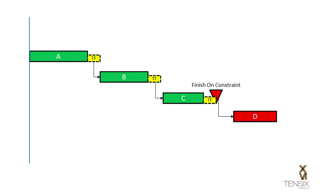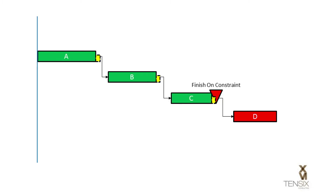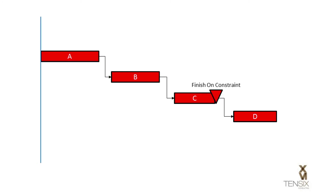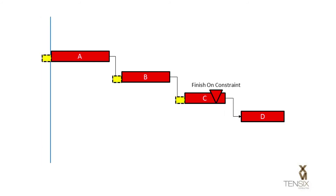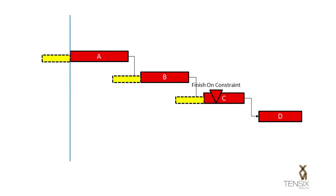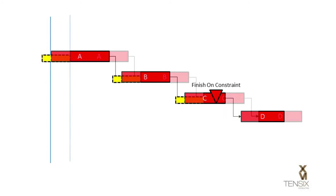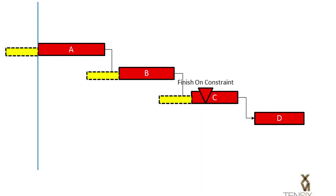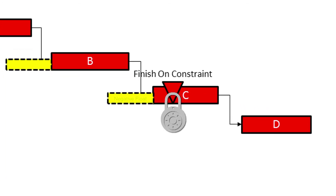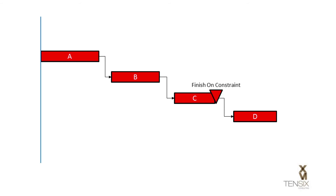So what will cause Negative Float in this situation? Let's say the project has started and some of the preceding activities are beginning to slip. When this happens, the float will start to be used up. First, Activities A through C become critical as their float drops to zero. If the project continues to slip, the activities become supercritical with a negative float value. The finish-on constraint on Activity C has been exceeded. You can see the negative float pushing back through the preceding activities. The calculated early dates are now calculating a date later than the finish-on constraint date. The constraint has locked the late finish date, so a negative float condition has appeared in the schedule. In short, you now have less than zero days to complete this work.